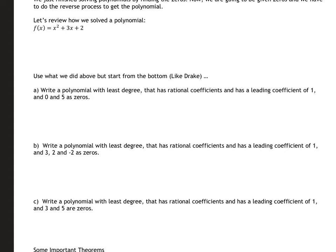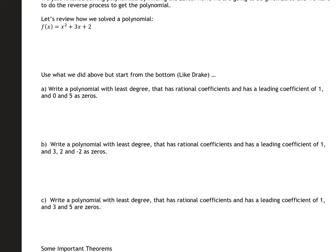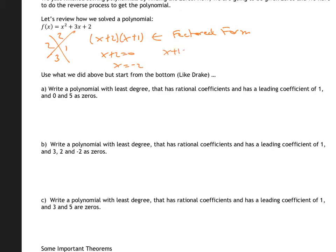Let's review how we solve a polynomial. If we have three terms with an x squared, we factor it. Factors of two that give you three are two and one, so we get (x + 2)(x + 1) — that is our factored form. Then we set each part equal to zero, and those solutions are called our zeros, roots, solutions, or x-intercepts. So we have our factored form and our zeros, and we're going to work our way back up from the bottom.